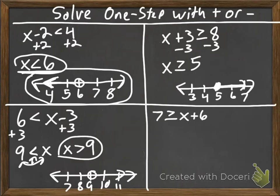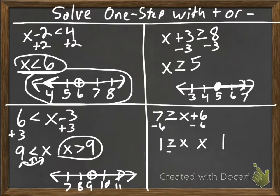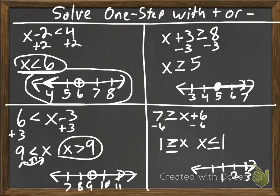The last example: 7 is greater than or equal to x plus 6. We subtract 6 and get 1 is greater than or equal to x. That's a bit odd to read, so we do the switch — x and 1. The inequality was pointing to x, so it still has to point to x, giving us x is less than or equal to 1. On the number line: closed dot at 1, arrow going left.